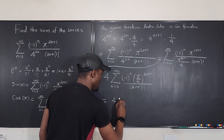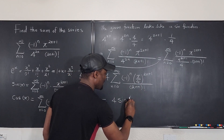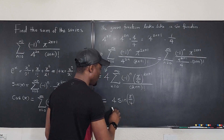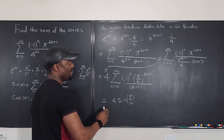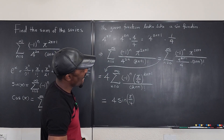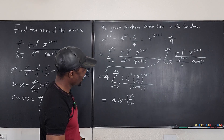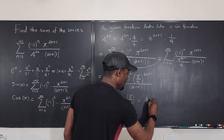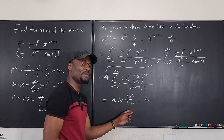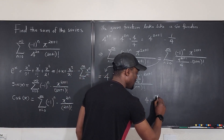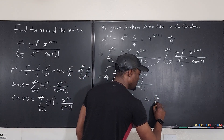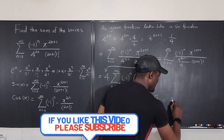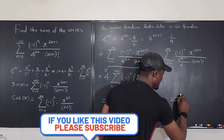So the original series equals 4 times sine(π/4). Since sine(π/4) equals √2 over 2, the final answer is 4 times (√2/2), which equals 2√2.